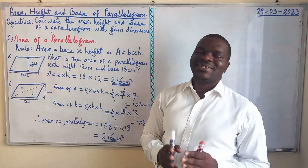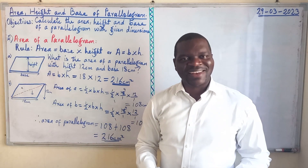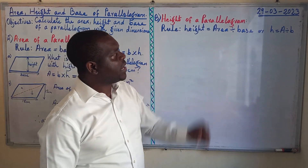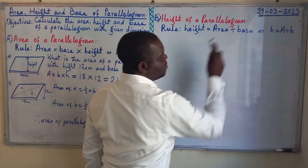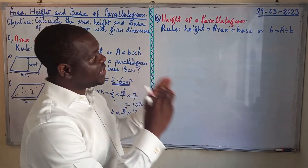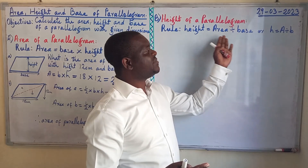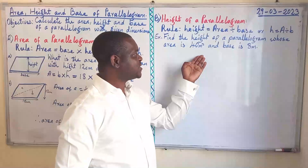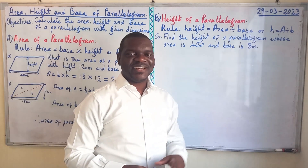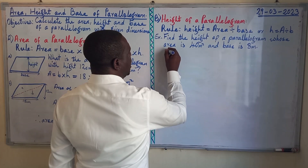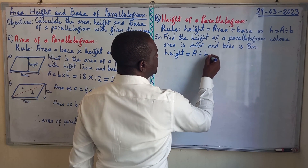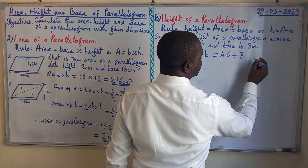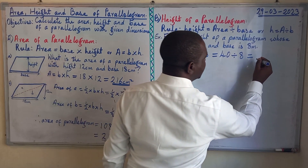Let's move to the second aspect: how to find the height of a parallelogram. To find the height, you simply divide the area by the base. For example: find the height of a parallelogram whose area is 40 meters squared and the base is 8 meters. Height = Area ÷ Base = 40 m² ÷ 8 m = 5 meters.